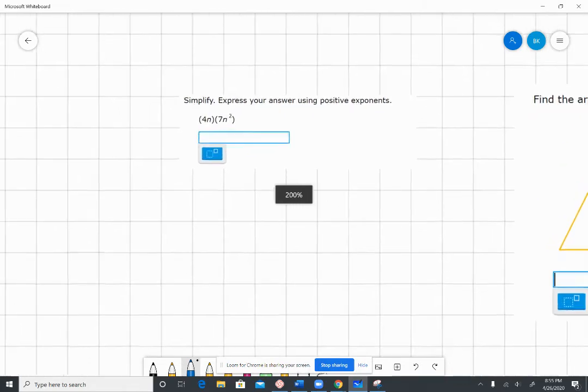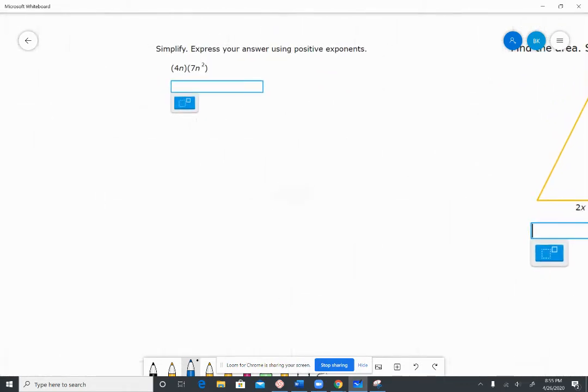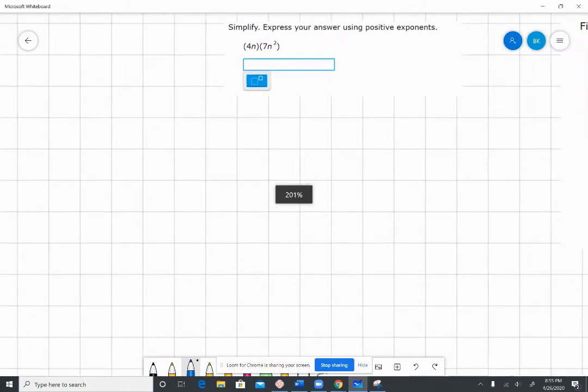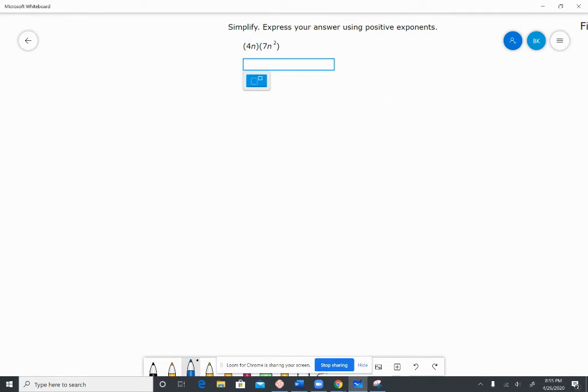The first type of problem you'll see looks a lot like this here, where you'll have something, two monomials just multiplied together. And what you do is just take one thing at a time.